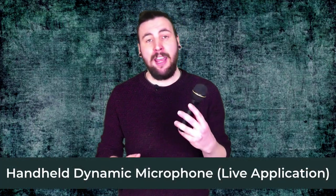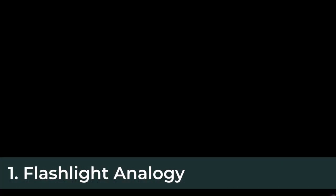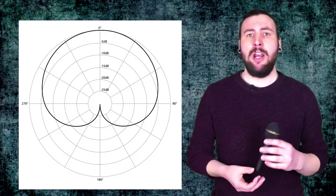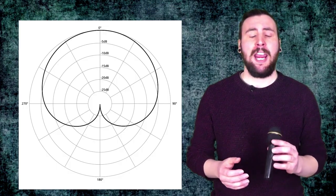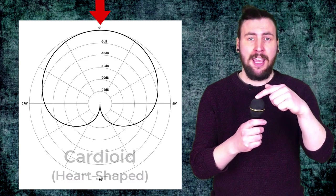We'll start by talking about using a handheld dynamic microphone for a live performance. The first tip is the flashlight analogy. Think of a microphone similar to a flashlight but for sound — a flashlight illuminates whatever you point it at, and in the same way a microphone picks up whatever you point it at. Most dynamic microphones feature a cardioid pickup pattern, meaning the microphone has the most sensitivity at the front and is least sensitive at the back. This isolates the mic from unwanted ambient sound and gives much more resistance to feedback, making a cardioid microphone particularly suitable for loud stages.